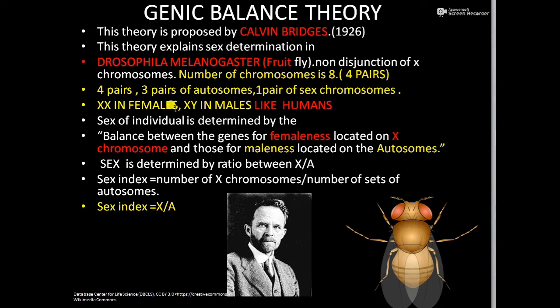This seems very similar to human beings, but in Drosophila melanogaster the Y chromosome does not play any role in the maleness of the fly. Here, sex is determined by the balance between the genes for femaleness located on the X chromosome and the genes for maleness located on the autosomes.